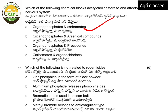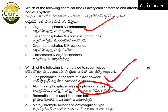Next: which of the following is not related to rodenticides? Rodenticides are used against rats, bandicoots, etc. Aluminium phosphide releases phosphine gas — correct. Bromadialone is used in poison bait — correct. Methyl bromide belongs to the anticoagulant group — this is incorrect; methyl bromide is not anticoagulant. Bromadialone comes under the anticoagulant group. So methyl bromide is the answer — it does not belong to the anticoagulant group.